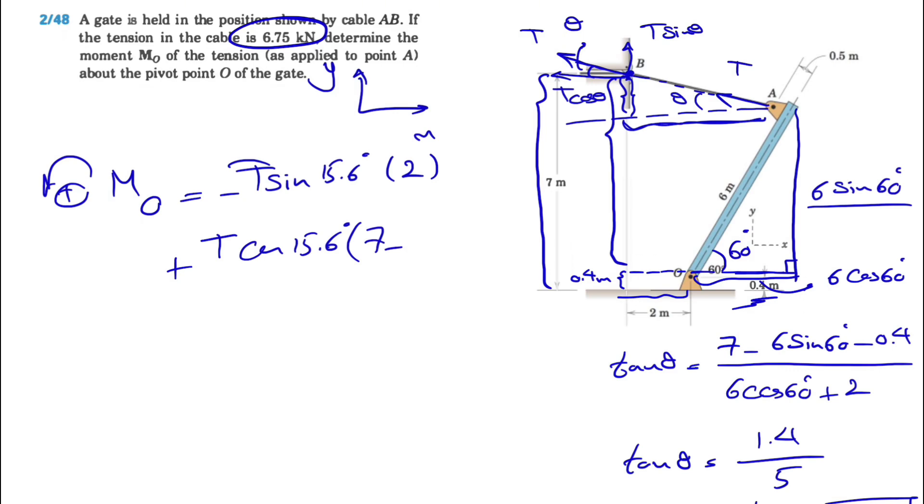That would be pretty much everything. Our T is 6.75 kilonewtons, so if you calculate this, the moment will be 39.9 kilonewton meters, which would be the final answer for this question.